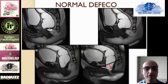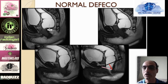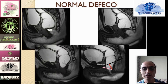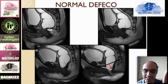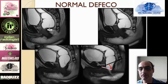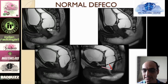During normal defecography, at rest you can see the anorectal angle and the puborectalis sling. When the patient performs the squeeze maneuver, the pelvic floor elevates and the anorectal angle becomes more acute. When the patient strains, there is a normal physiologic descent of the pelvic floor, and the anorectal angle becomes wide and obtuse — the rectum and anal canal align in a straight line, setting the stage for defecation. The PC line is visible, and all descent distances are measured as perpendicular tangents below it.